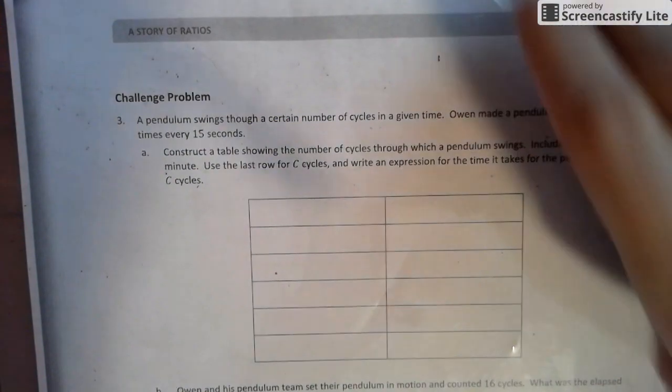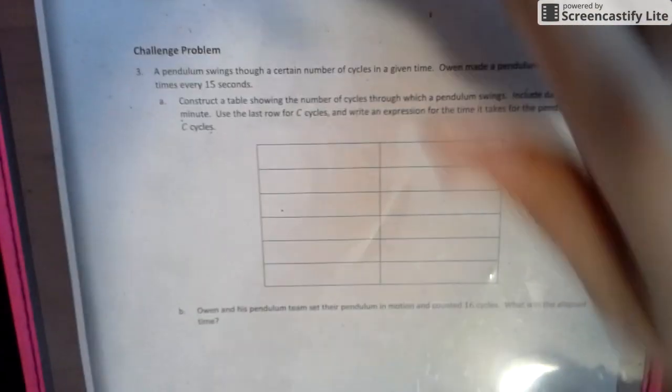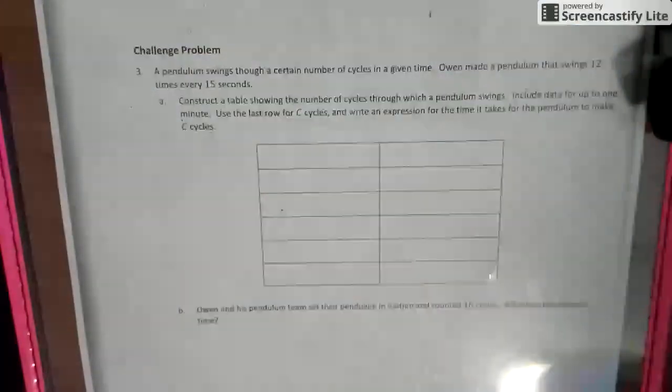Okay. So everybody put their following motions into play. So a pendulum swings through a certain number of cycles in a given time. Owen made a pendulum that swings 12 times every 15 seconds.